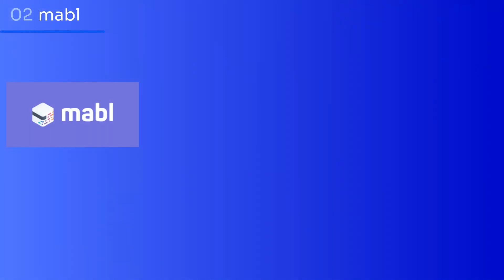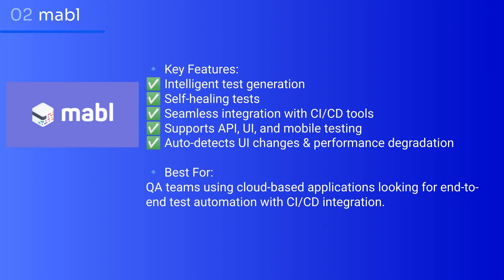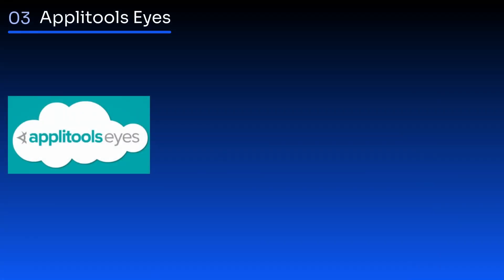Mabl is a low-code, cloud-based test automation platform focusing on intelligent testing for modern CI/CD workflows. It provides end-to-end test automation with AI-powered insights. Key features: intelligent test generation, self-healing tests, seamless integration with CI/CD tools, supports API, UI, and mobile testing, and auto-detects UI changes and performance degradation. Best for QA teams using cloud-based applications looking for end-to-end test automation with CI/CD integration.